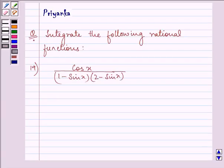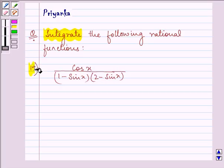Hello friends, how are you all today? The question says integrate the following rational functions. The function given to us is cos x upon 1 minus sine x into 2 minus sine x.